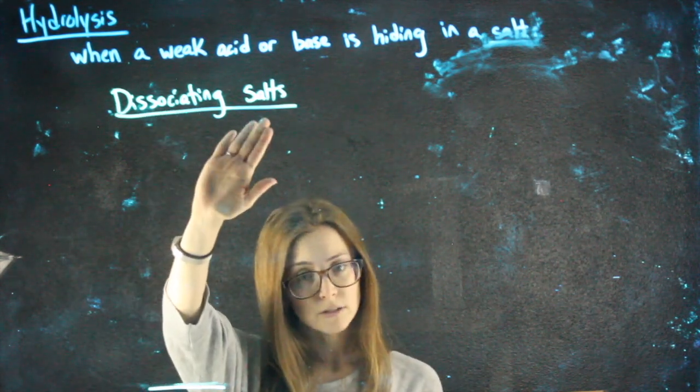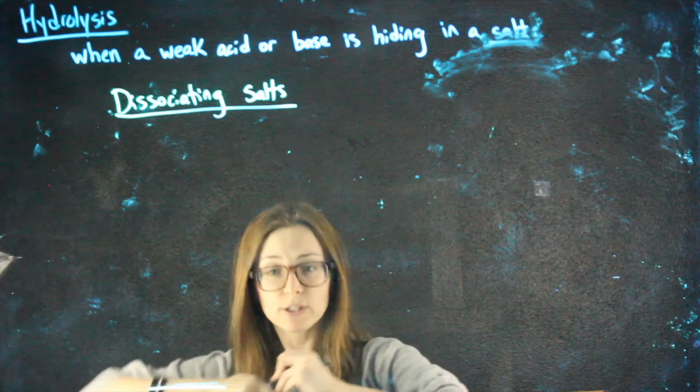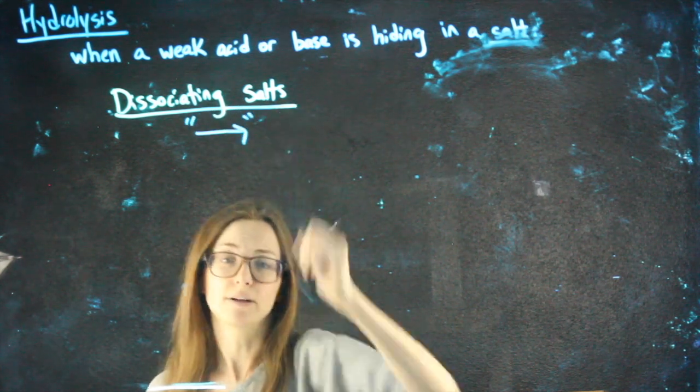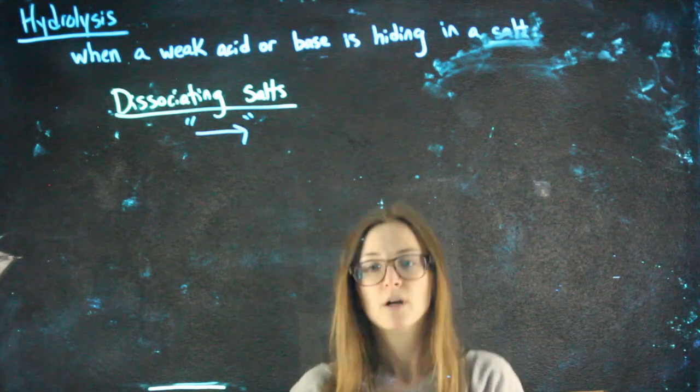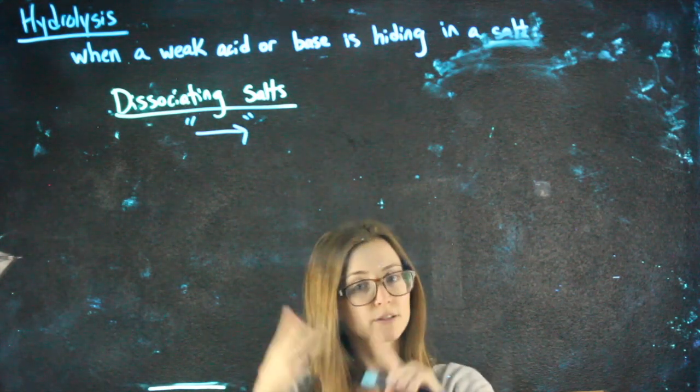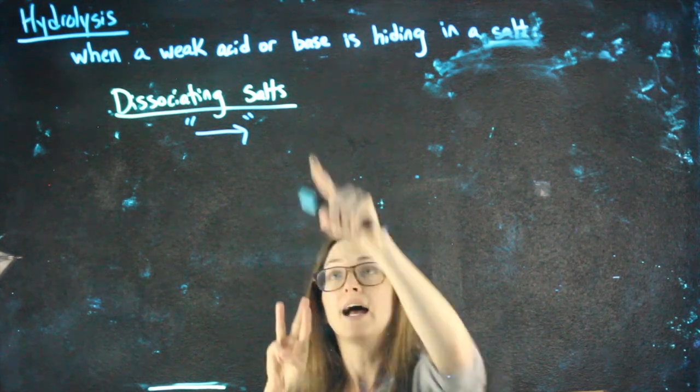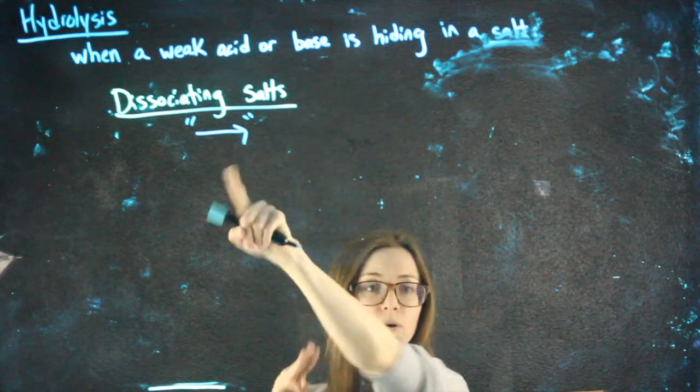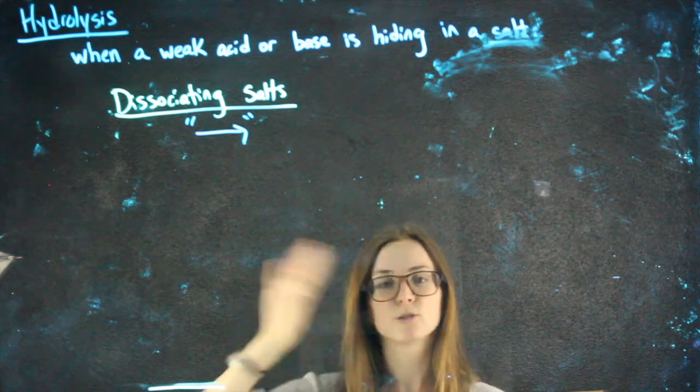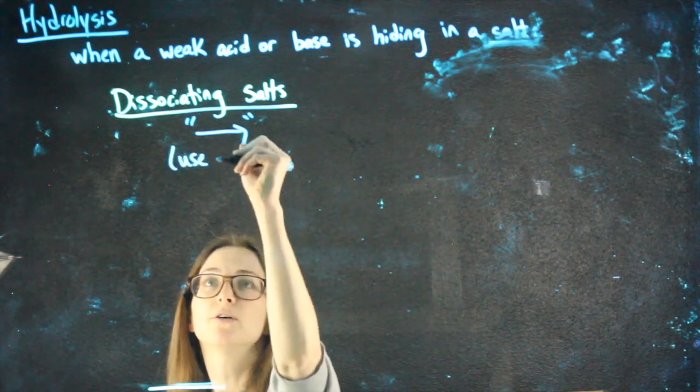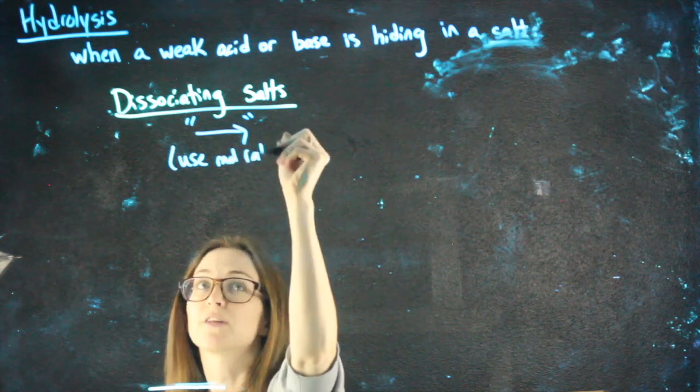Okay. So dissociating salts. When we dissociate salts, that's going to be another instance of using a single arrow, not an equilibrium arrow. So strongs and salts, single arrow is a way of remembering it. Strong acids and bases, strongs. And salts, we use a single arrow. Why that matters, when we're doing any math, single arrow means that we can use mole ratios rather than ice charts.